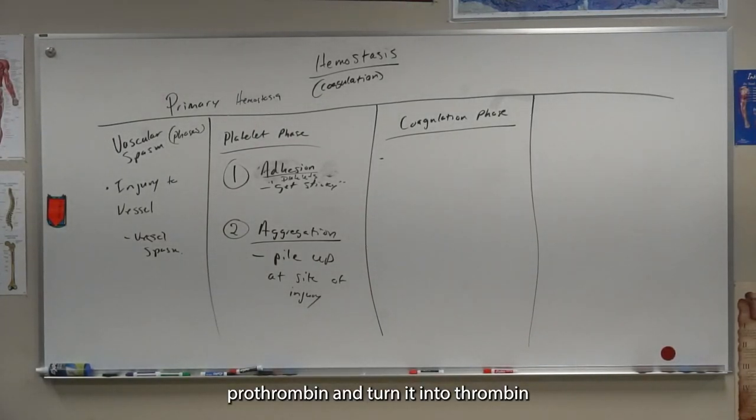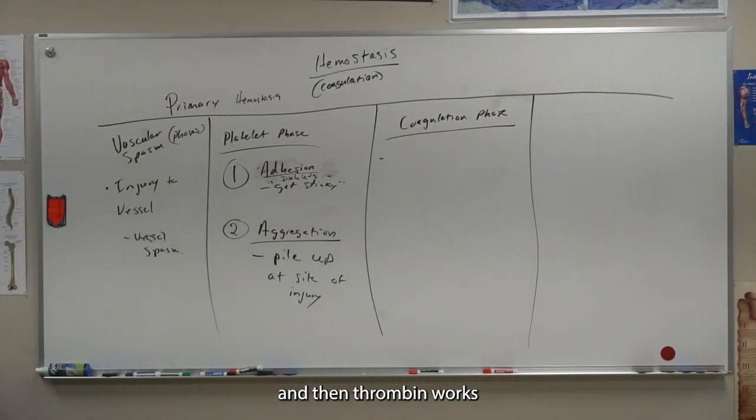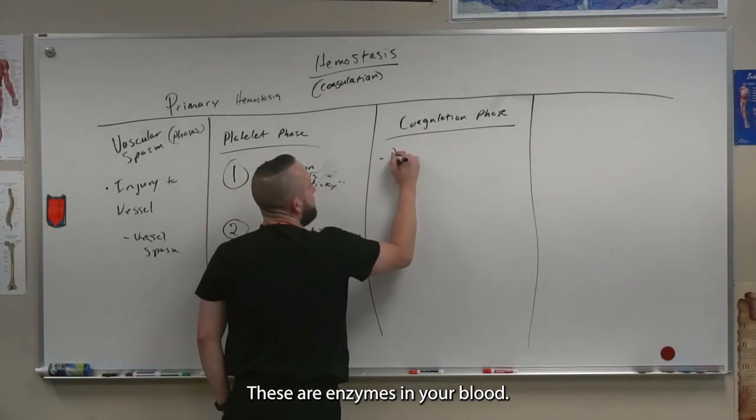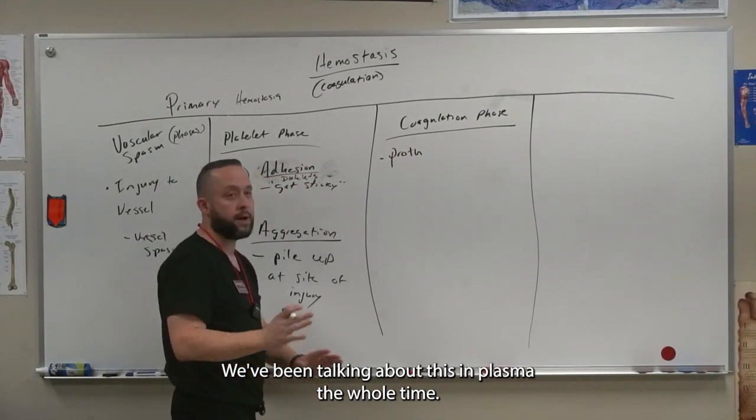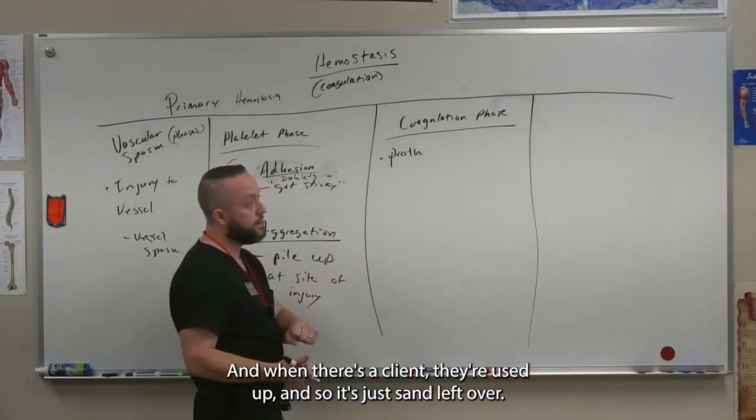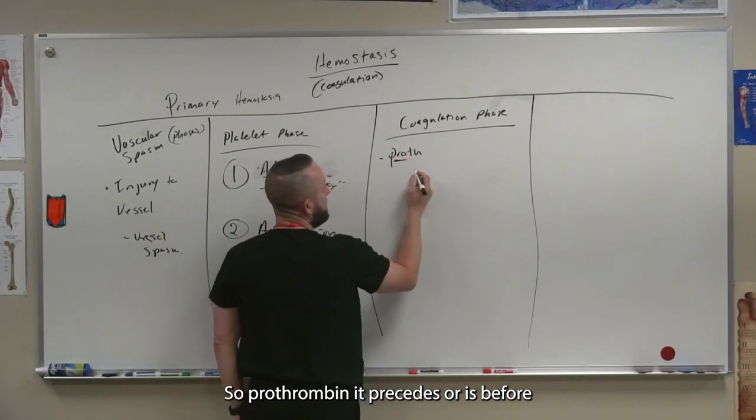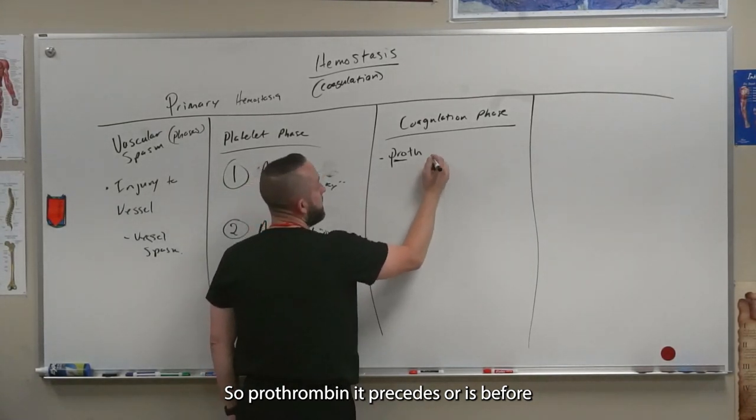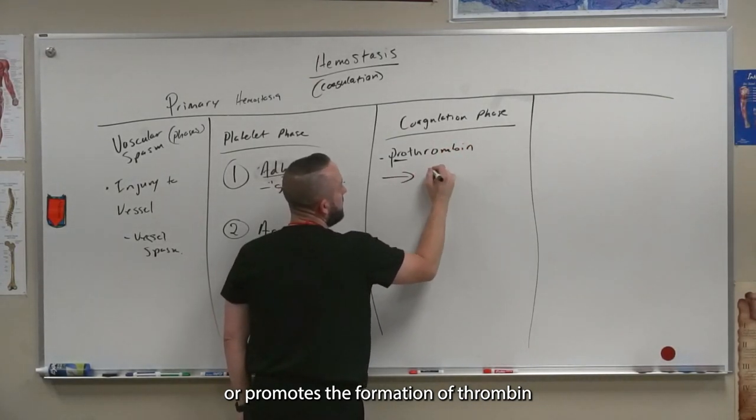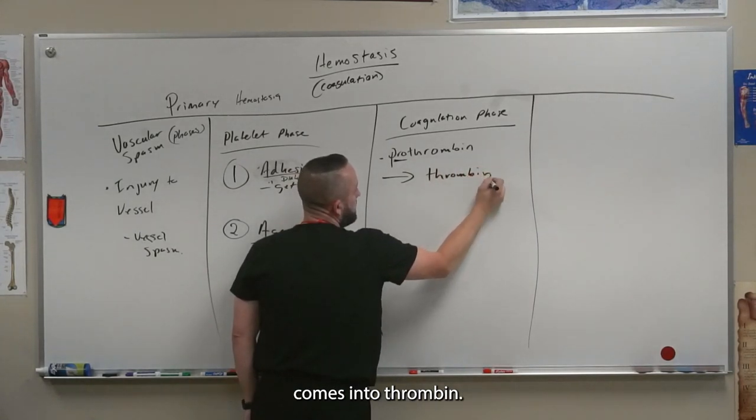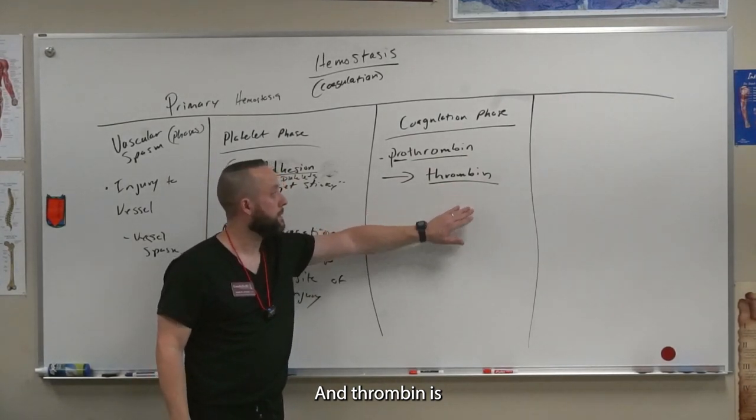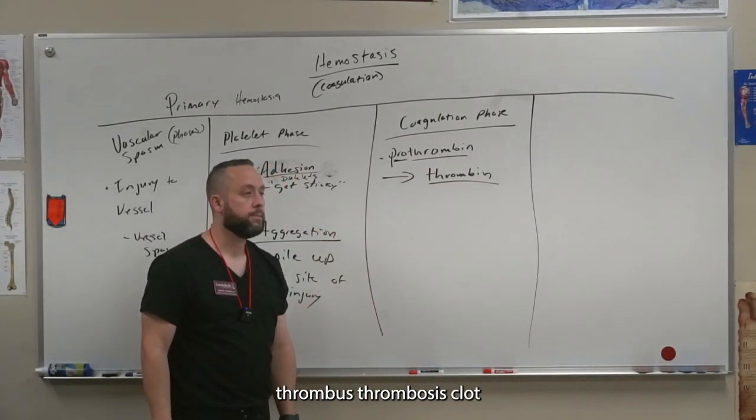So you got prothrombin turning into thrombin. And then thrombin works to make fibrinogen into fibrin. These are enzymes in your blood. These are the clotting factors we've been talking about that's in plasma the whole time. And when there's a clot, they're used up and so it's just serum left over. So prothrombin, it proceeds or is before or promotes the formation of thrombin. It turns into thrombin. These are important terms to remember. And thrombin is a pretty common term. Thrombosis, clot.